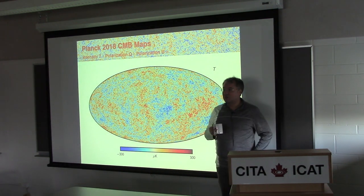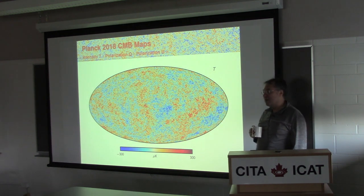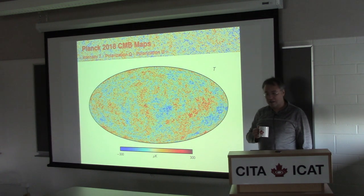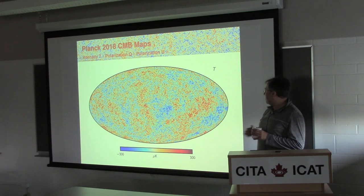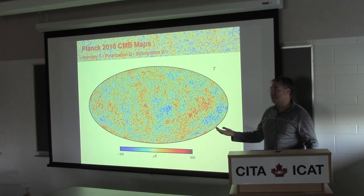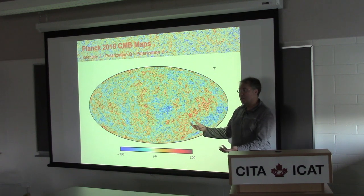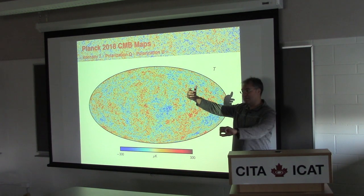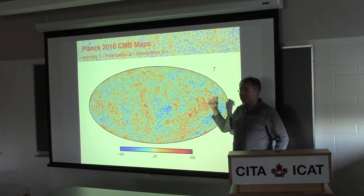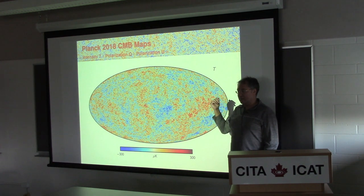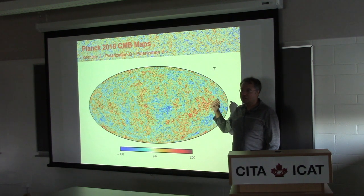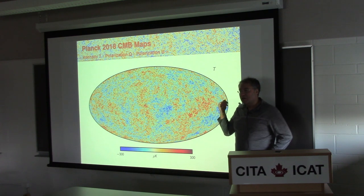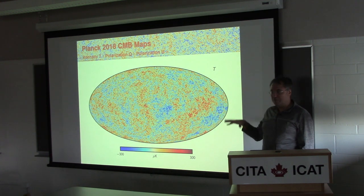The CMB structure has a characteristic size on the sky. These are essentially just differences in gravitational potential when the photons climb out when the medium gets recombination done. Apart from a variety of transfer functions applied to it, it's literally a picture of the gravitational potential at about 400,000 years after the Big Bang. So it's a nice picture to have - you have the primordial physics imprinted.